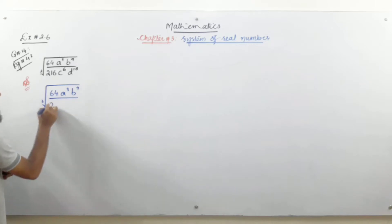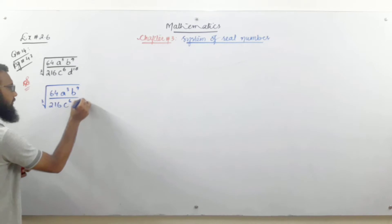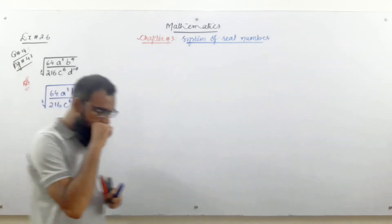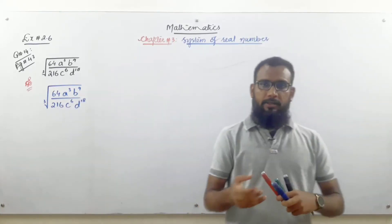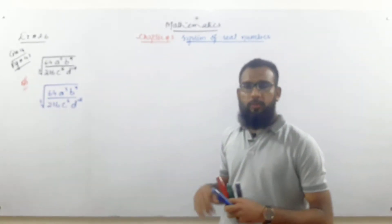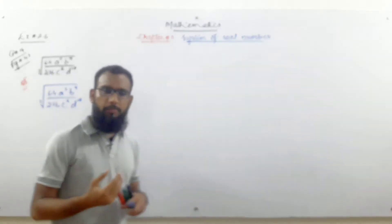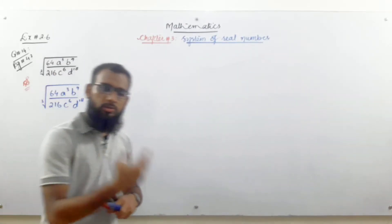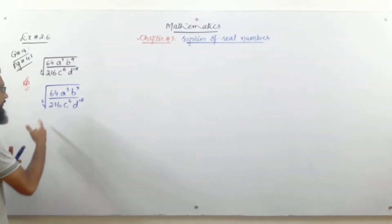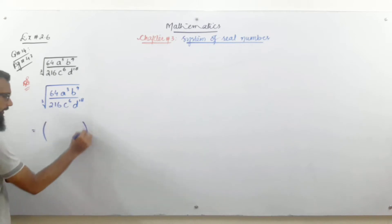The question is: 64a^9 over 216c^6 and d^18. After repeating the question, what do we do next? The cube root — you should know that the power of cube root is 1/3. Square root has power 1/2 and fourth root has power 1/4. Similarly, we resolve the cube root here and apply the power 1/3.